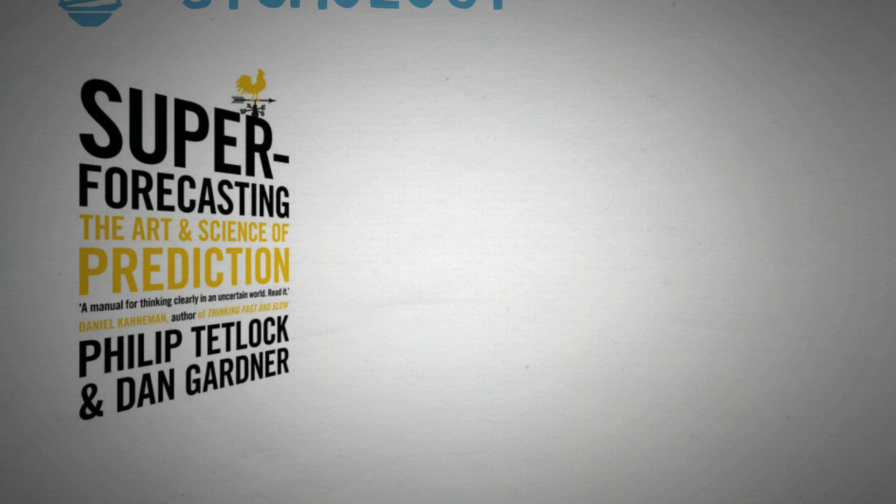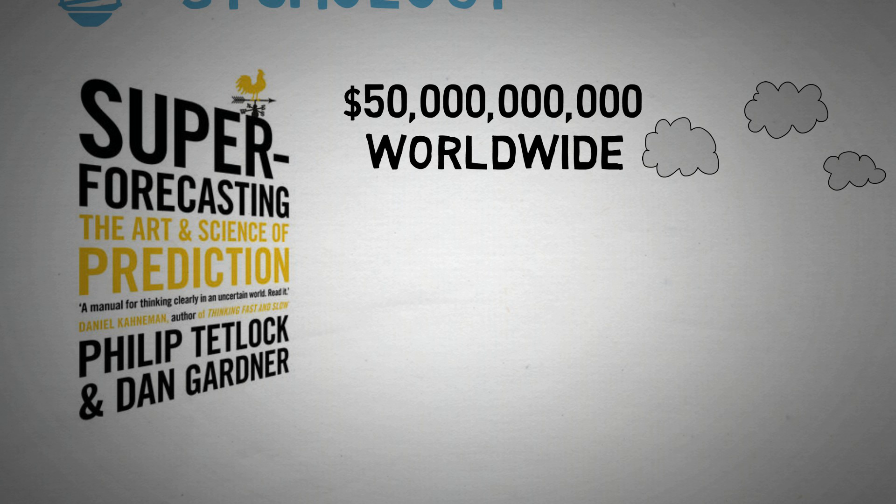Superforecasting is predicting things in the future that are very relevant. There's an annual budget of 50 billion dollars spent on forecasting, whether that be stuff like the weather, or is there going to be a huge war outbreak in the next 15 years. This book explains how people actually predict that.